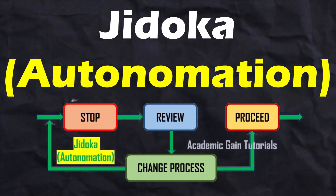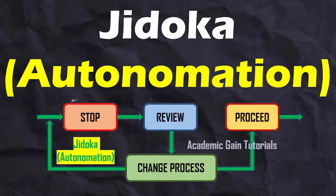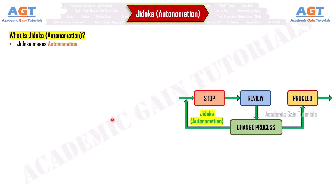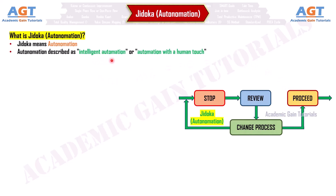Jidoka, or Autonomation. So what is Jidoka? Jidoka means Autonomation. Autonomation is described as intelligent automation or automation with a human touch. Jidoka or Autonomation refers to partially automating manufacturing.